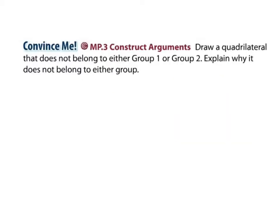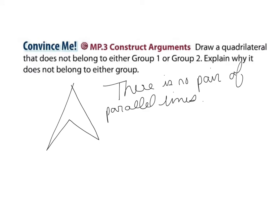Draw a quadrilateral that does not belong to either Group 1 or Group 2. Explain why it does not belong to either group. I will draw this polygon. This shape does not have a pair of parallel lines. It also is not a trapezoid, and the sides are not equal.